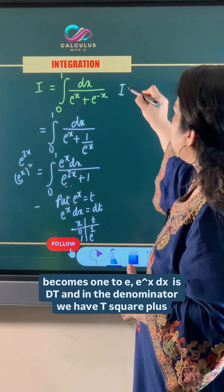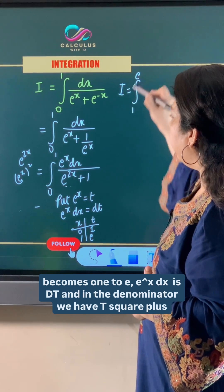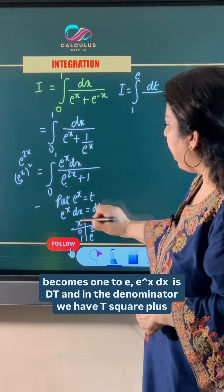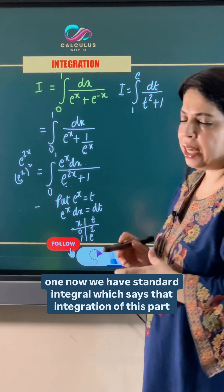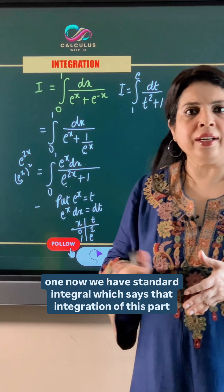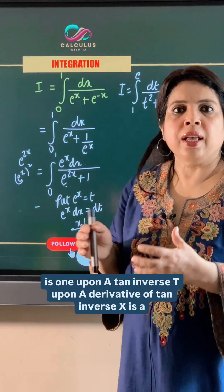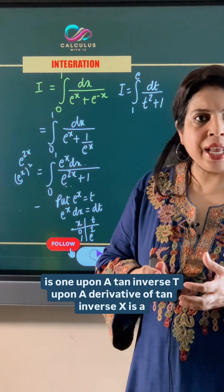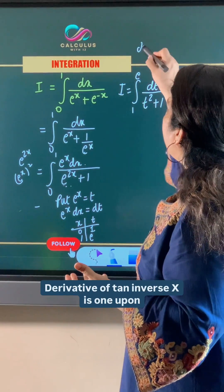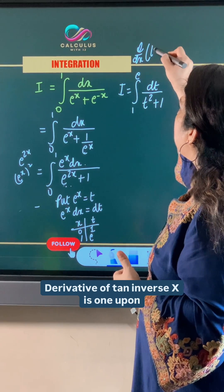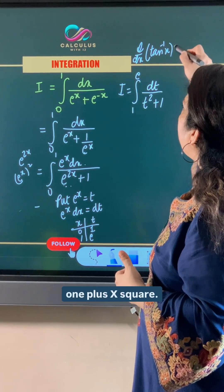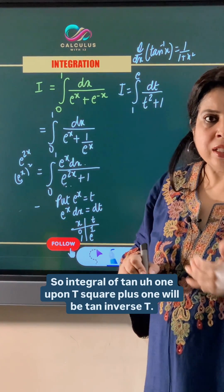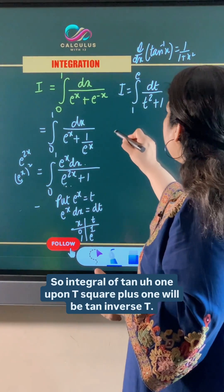So the integral I becomes from 1 to e, where e^x dx is replaced by dt, and in the denominator we have t squared plus 1. We now apply the standard integral: the derivative of tan inverse x is 1 upon 1 plus x squared, so the integral of 1 upon t squared plus 1 is tan inverse t.